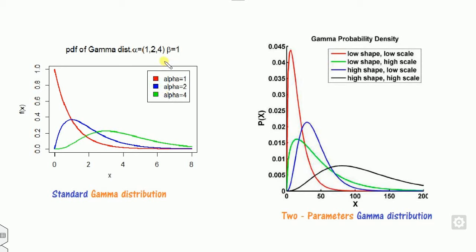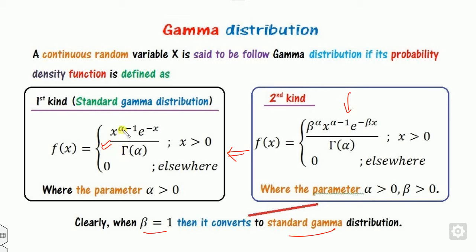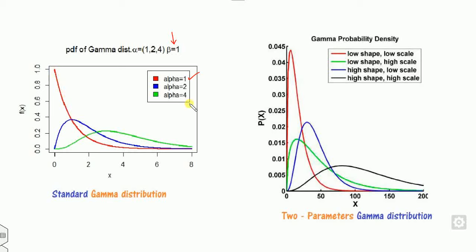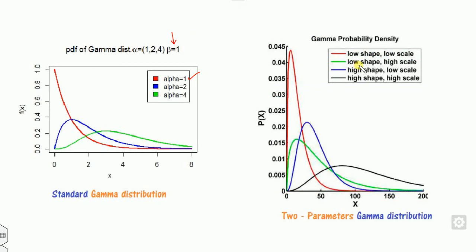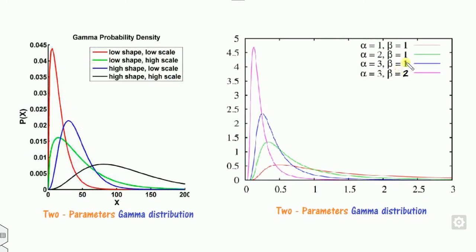Looking at the graph with beta fixed at 1: if alpha is 1, then x to the power 0 is 1, so the function becomes e to the minus x — that is the red curve. As alpha increases, the shape of the distribution changes, as shown by the blue curve and others. That is why alpha is called the shape parameter.